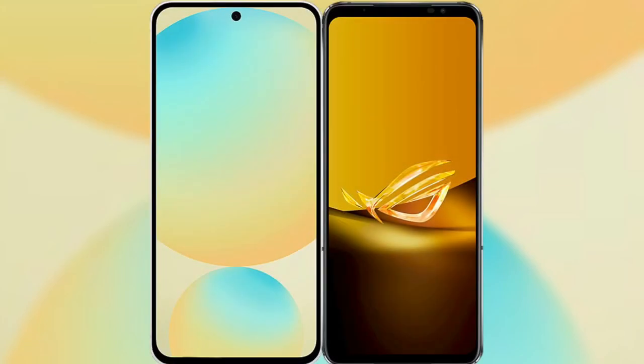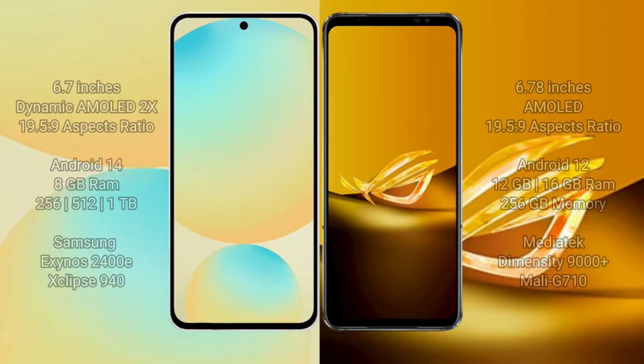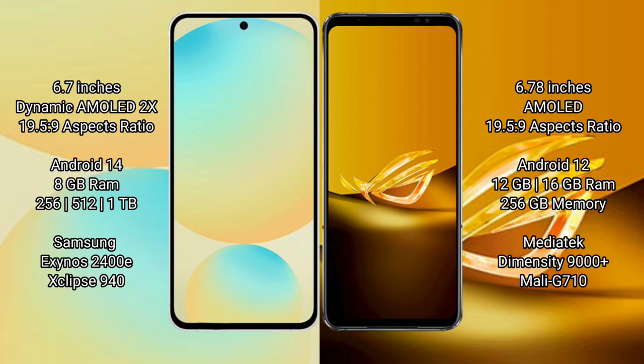I will compare the new Samsung Galaxy S24 FE with the Asus ROG Phone 6D. Samsung Galaxy S24 FE has a 6.7-inch Dynamic AMOLED display. Asus ROG Phone 6D has a 6.78-inch AMOLED display. Samsung Galaxy S24 FE runs on the Android 14 operating system. Asus ROG Phone 6D runs on the Android 12 operating system.